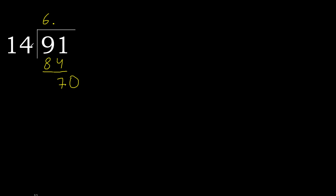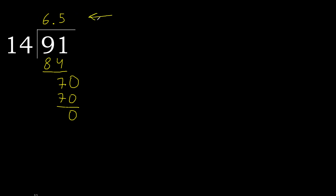Now we have 70. 14 multiplied by 6 is 84, which is greater. 14 multiplied by 5 is 70 — ok. 70 is not greater, subtract: 70 minus 70 equals 0, therefore finished. 91 divided by 14 is 6.5.